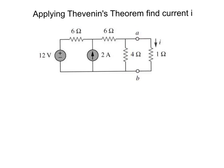Let's start finding the Thevenin equivalent. We need to find R Thevenin and V Thevenin. First of all, we need to remove the load, because the equivalent is determined at an open circuit between A and B. Once that's done, we can start looking at the equivalent resistance R Thevenin. This will be our first step — to find RTH.